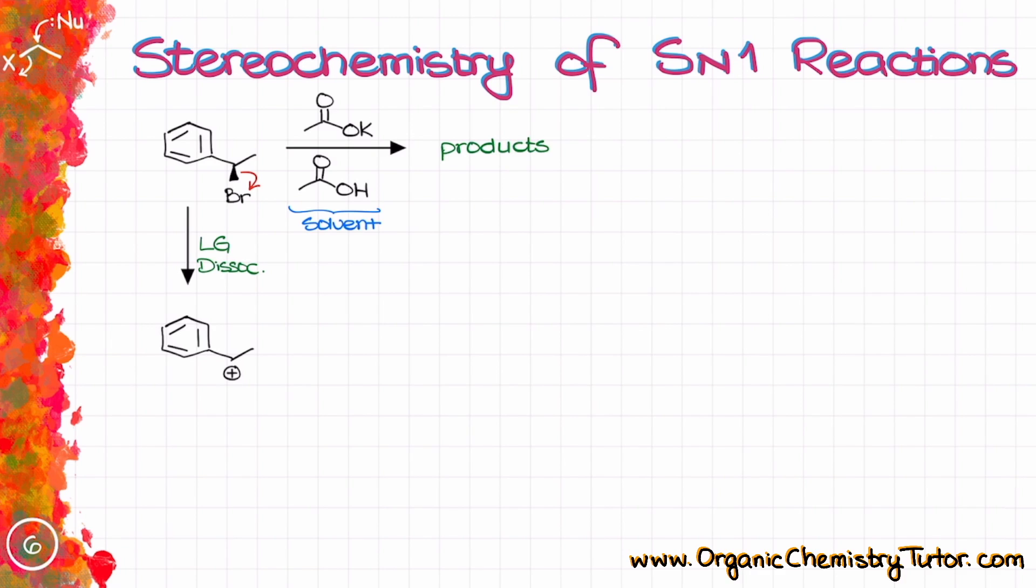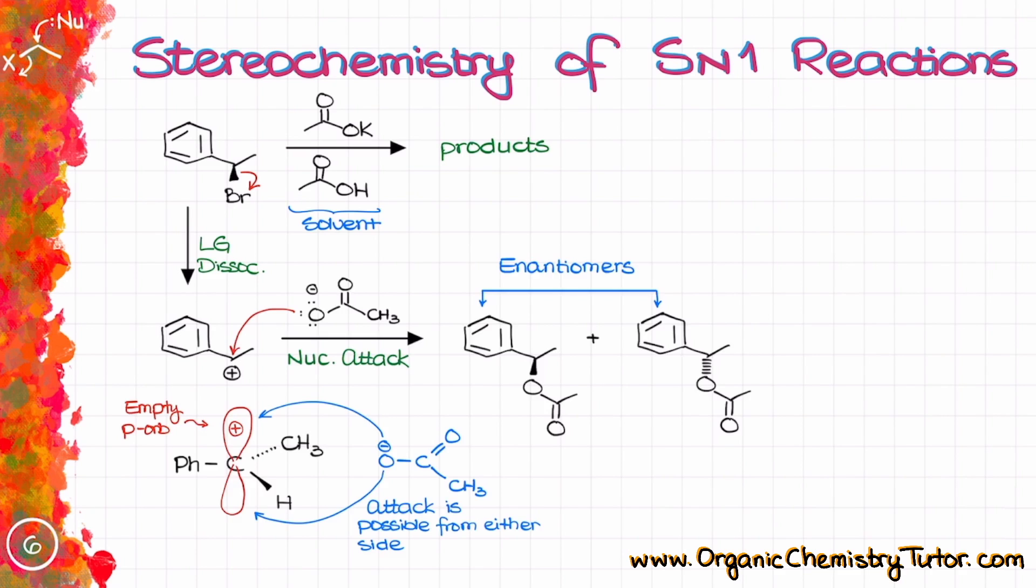And as the leaving group dissociates from our molecule, we are going to form a carbocation. Well, carbocations, they are positively charged sp2 hybridized trigonal planar species in their geometry, which means that if I were to draw it, I can have a nucleophilic attack on the carbocation happening from two different sides.